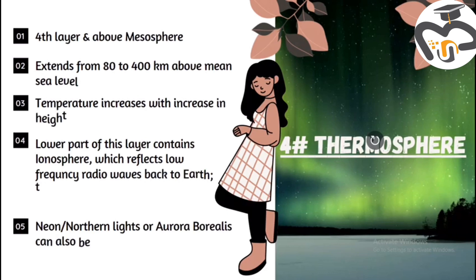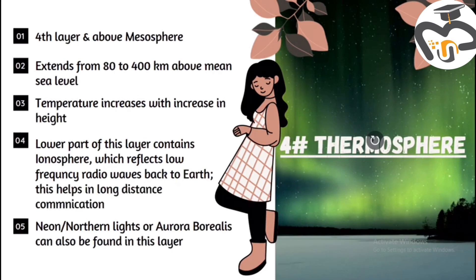Number four: the thermosphere. It's the fourth layer and it's present above the mesosphere. It extends from 80 to 400 km above mean sea level. The temperature increases with increase in height. The lower part of this layer contains the ionosphere, which reflects low-frequency radio waves back to the Earth, helping in long-distance communication. The Northern Lights, or the Aurora Borealis, are also present in this layer.